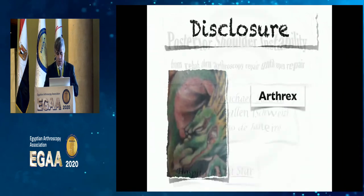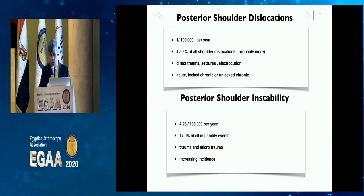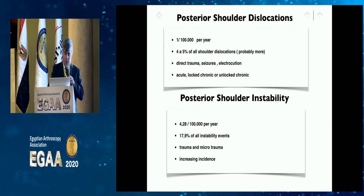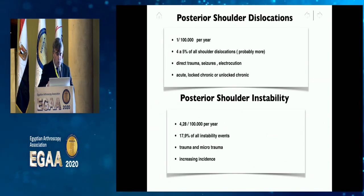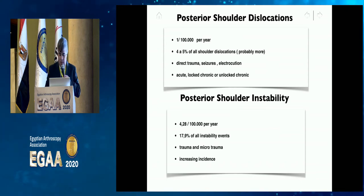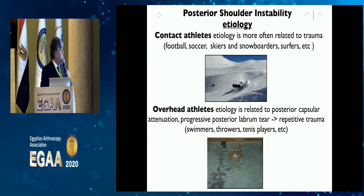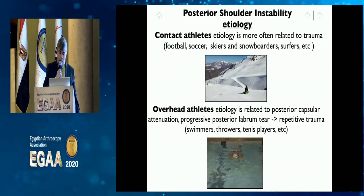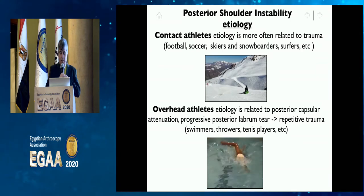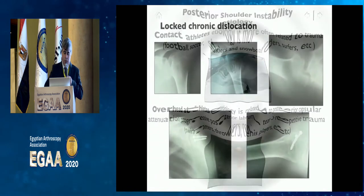First we have to establish what posterior shoulder instability is. We're talking about dislocations — a mostly uncommon condition accounting for four to five percent of all shoulder dislocations, related to direct trauma, seizures, and acute, chronic locked, or chronic unlocked presentations — or we're talking about instability, which we see in around eighteen percent of athletic instability events.